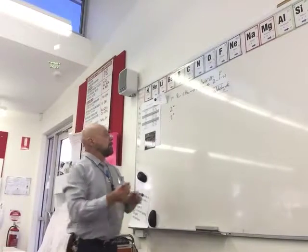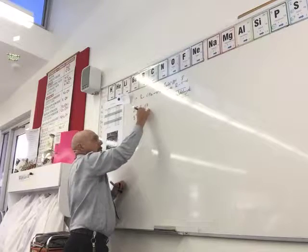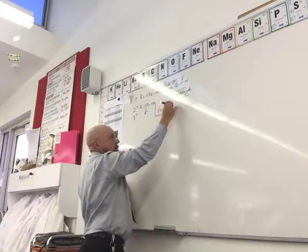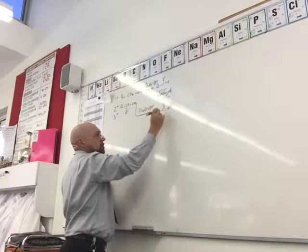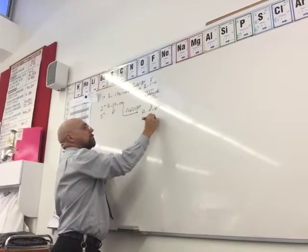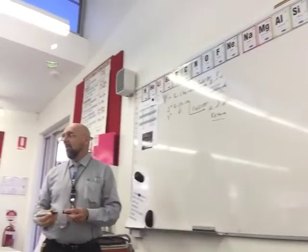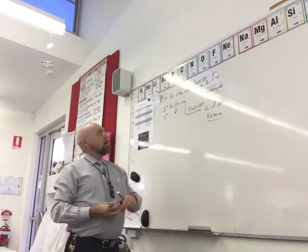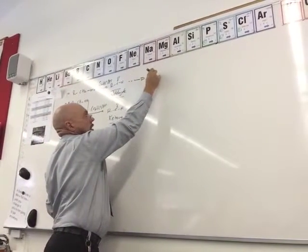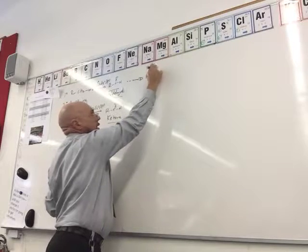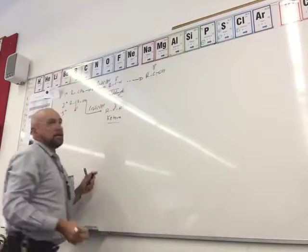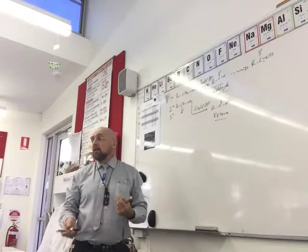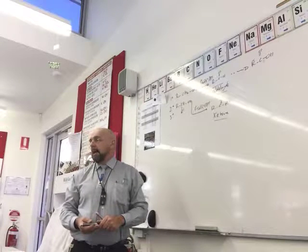Aldehydes are more important than ketones. Oxidizing a secondary alcohol with dichromate gives us a ketone functional group. The first step in the aldehydes and ketones section is: how do we make an aldehyde? Oxidation of a primary alcohol — that's step one. But remember, that can go further and produce a carboxylic acid.